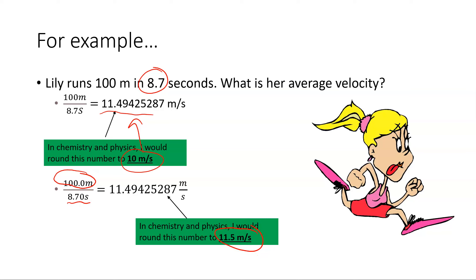And all it came down to was adding a decimal place and a zero in these numbers. 100 is essentially the same as 100.0, but by putting that point zero there for 100 meters, I'm telling the chemist or physicist that I actually measured that 100 meters pretty precisely. Whereas only writing it as 100 meters, I just know that it's about 100 meters or approximately, and so my answer here is going to be an approximation. Here I can give a much more precise answer because I measured more precisely originally.